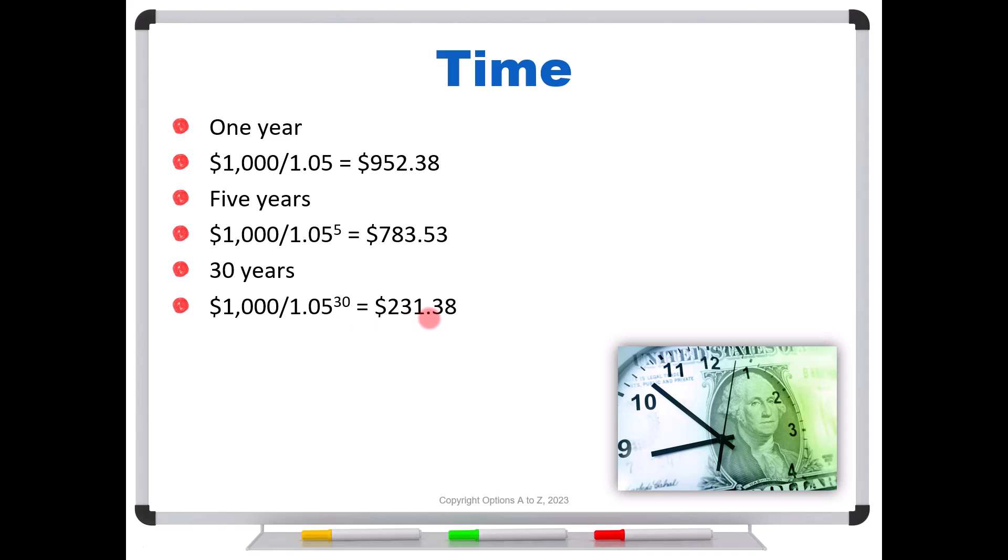It looks like you're getting an unbelievable deal. You're paying $231 and it's going to mature to $1,000, so it looks like you're going to be making money hand over fist. But remember, you're waiting 30 years for that to happen. We can decrease the bond's price by either increasing the interest rate or by holding the interest rate constant and increasing the time.